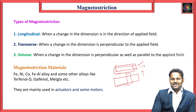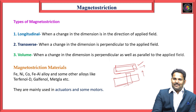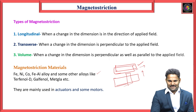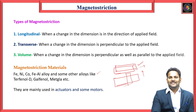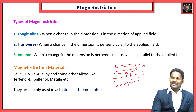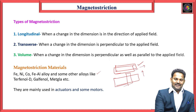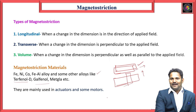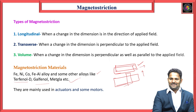Examples of magnetostrictive materials include nickel, iron, cobalt, and iron-aluminum alloys. Some other alloys such as Terfenol and Galfenol and Metglas also exhibit magnetostriction values.